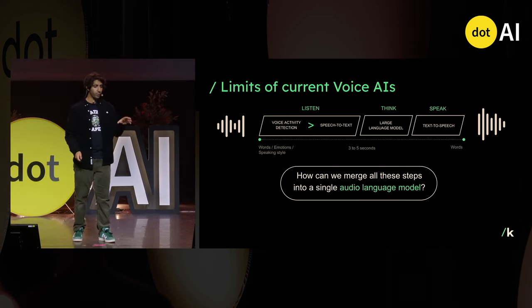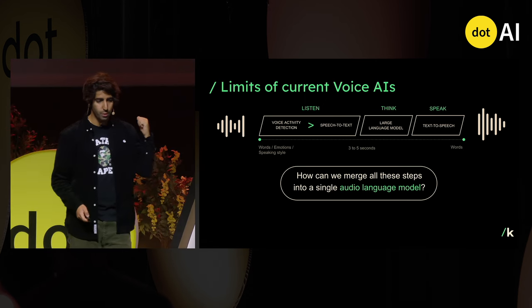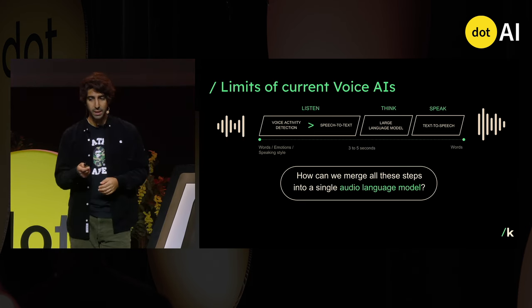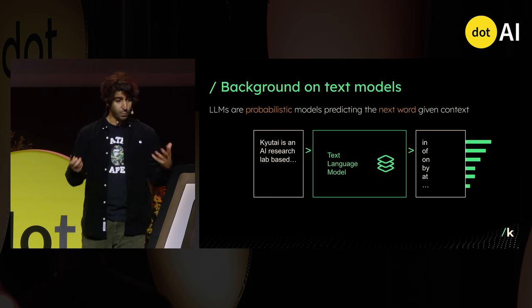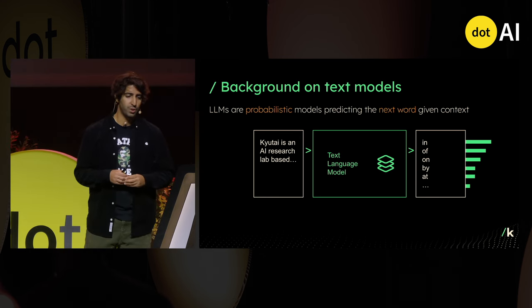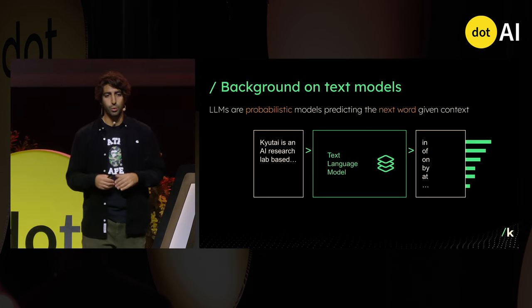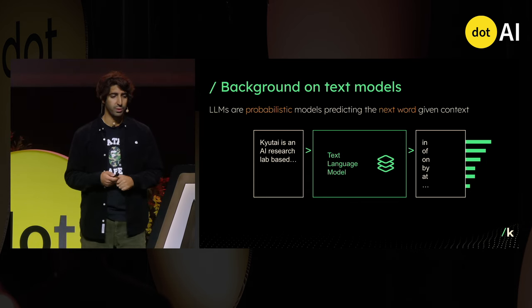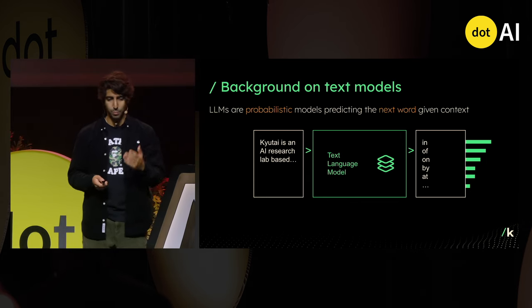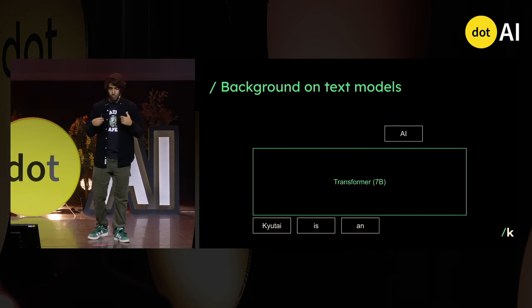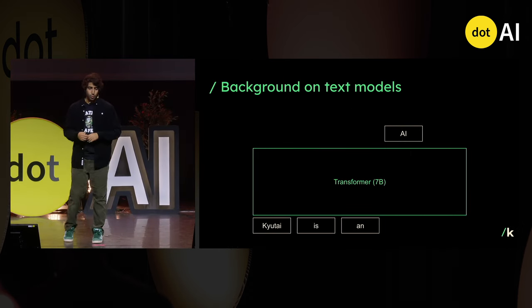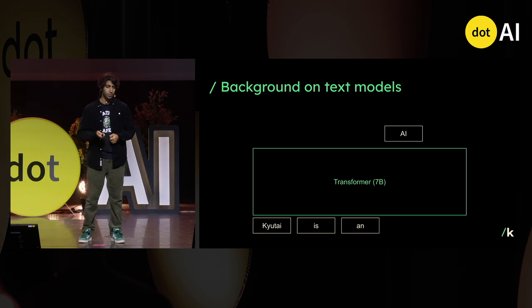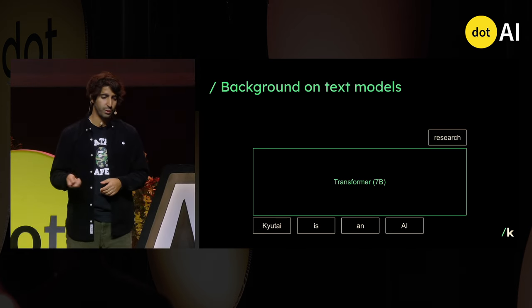The main question is: how do we go from this kind of cascaded pipeline to what we just saw? The main idea is how do we go from a pipeline to a single end-to-end model. Today I'm going to share as many technical details as I can. First, let's take a step back to how a text model works. A text model is a probabilistic model that predicts the next word given context. In our case, the foundation is a text language model called Helium that we trained at Kyutai — it's a 7B model trained to predict the next token.